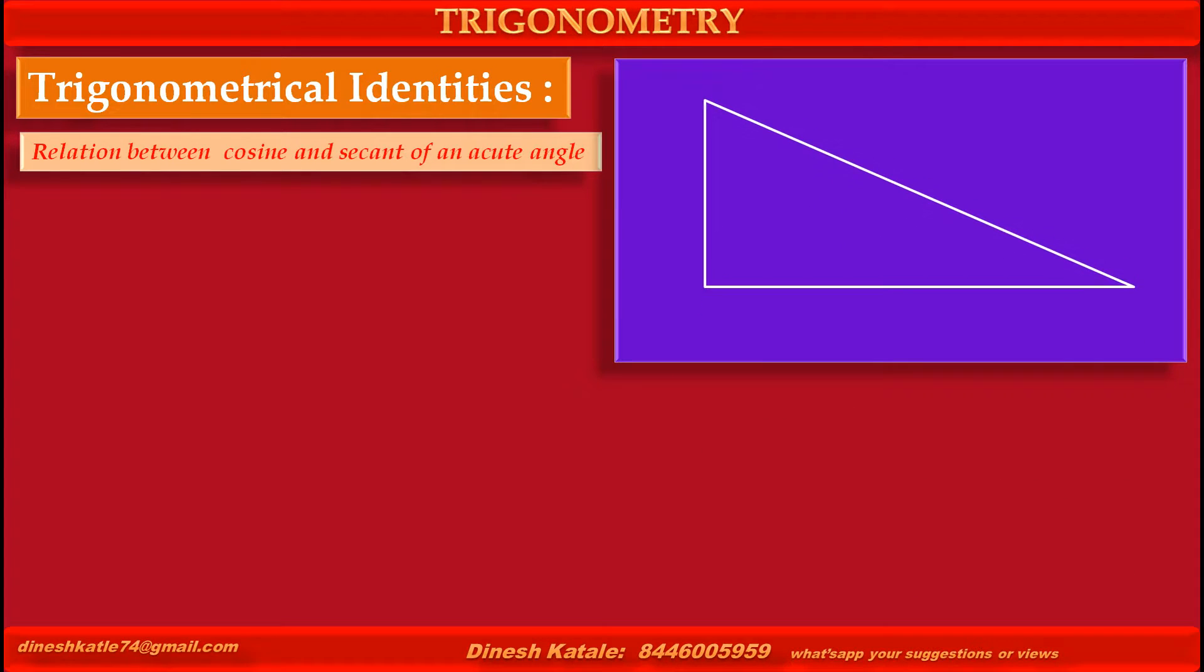Consider a right-angled triangle with vertices O, Q, P where Q is a right angle.